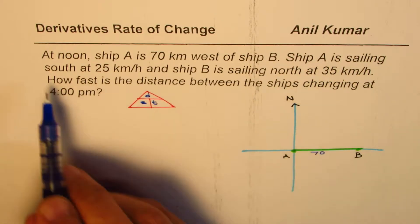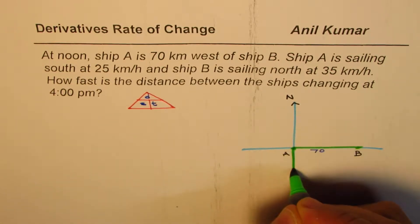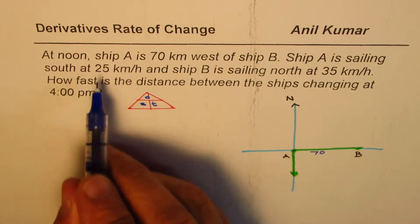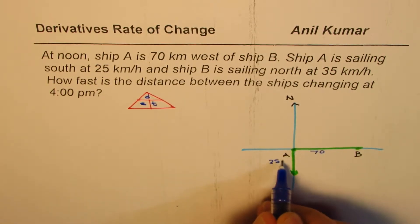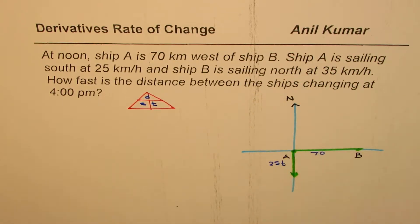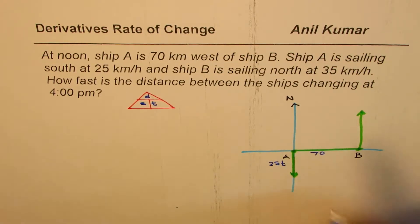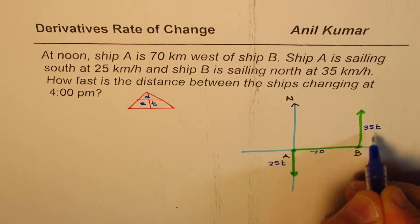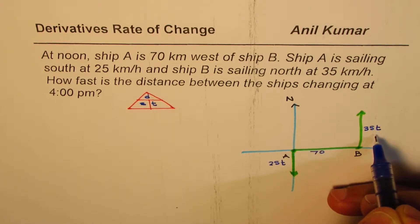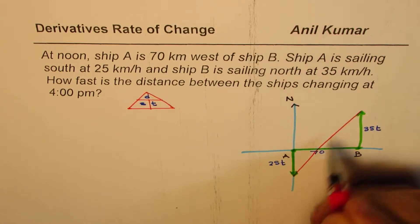When we say that ship A is sailing south at 25 km per hour, that means A is moving like this. Let us say at time T, it is somewhere here. What is going to be the distance? It will be 25 times T. So this distance will be 25T. On the other hand, ship B is sailing north at 35 km per hour, so that will go like this. In this time, we will reach a point which will be 35 times T. That is going to be the position of ship B after time T, and distance between the two will be this much.